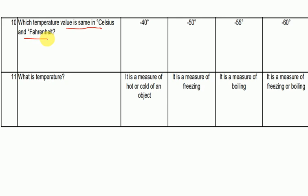If the temperature in Fahrenheit is equal to the temperature in Celsius, it is equal to minus 40 degrees. What is temperature? Temperature is the measure of hot or cold of an object.